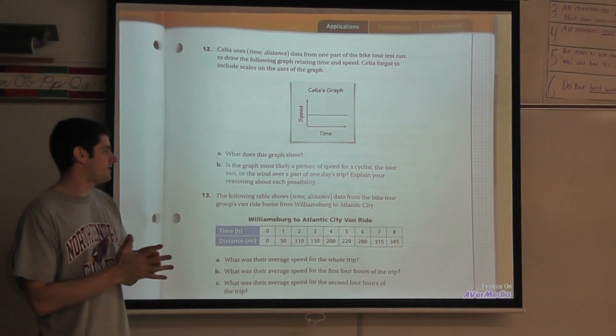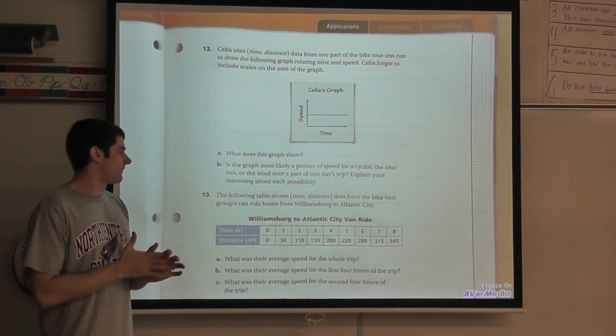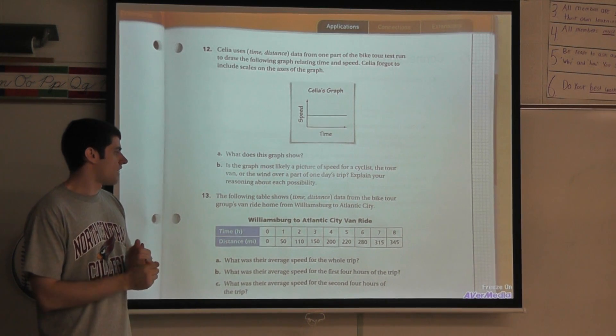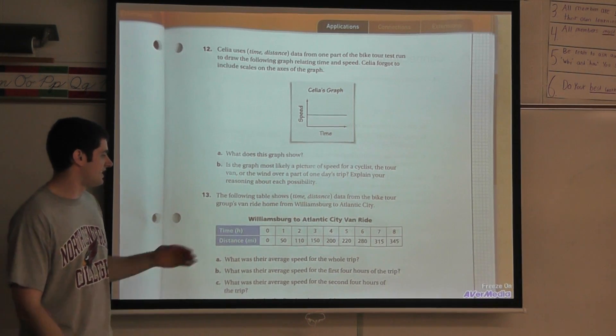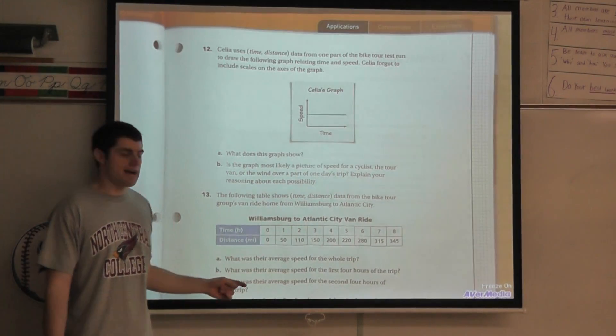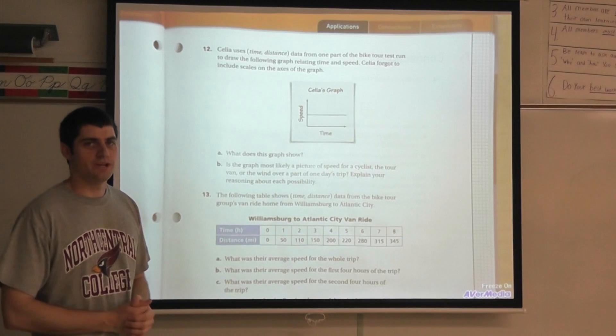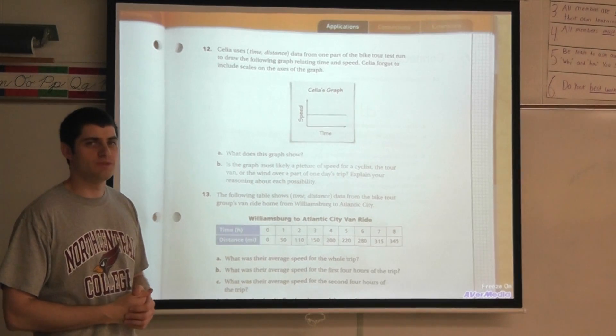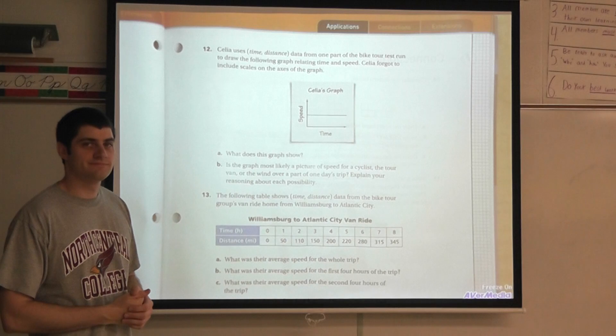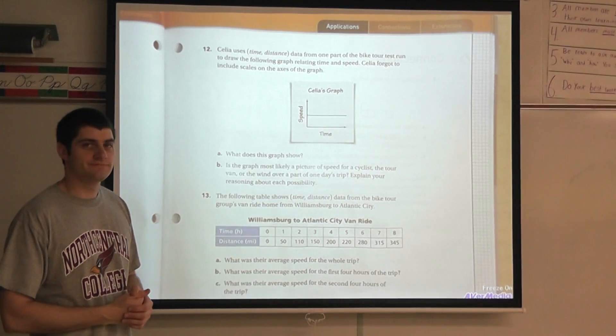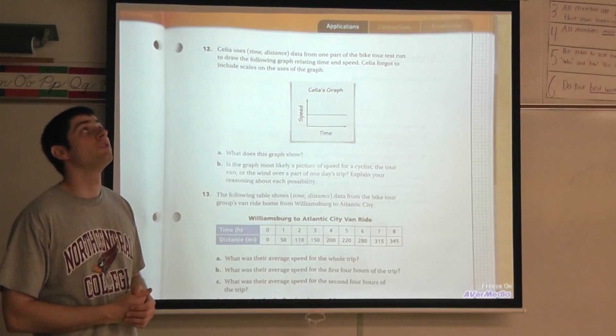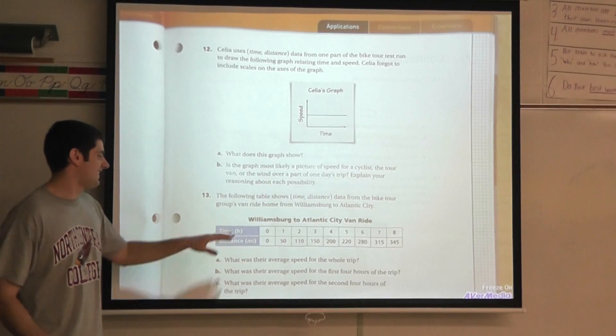All right, here's your problem, problem 13. It says the following table shows time distance data from the bike tour groups van ride home from Williamsburg to Atlantic City. Here is your table. I'd like you to answer questions a, b, and c. I know you have your stuff ready to go at home so go ahead and pause the video and we'll see what you come up with.